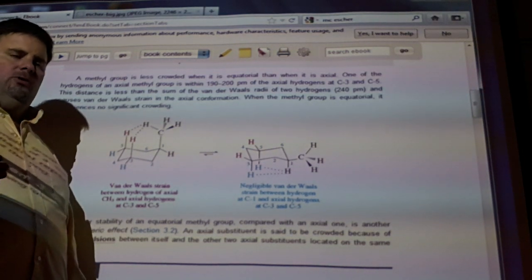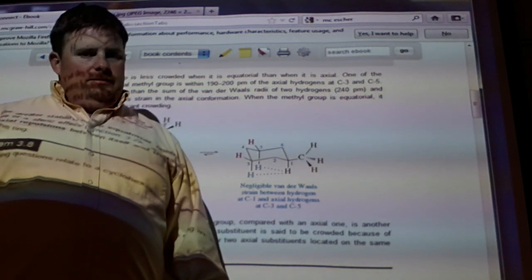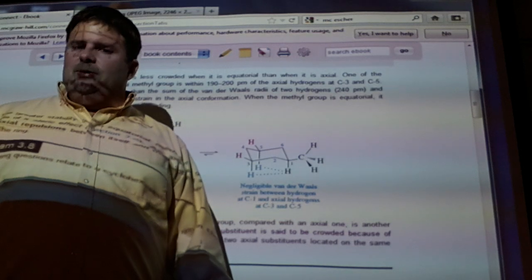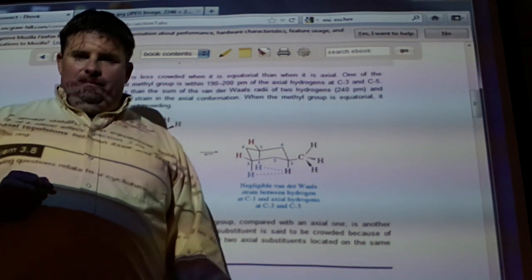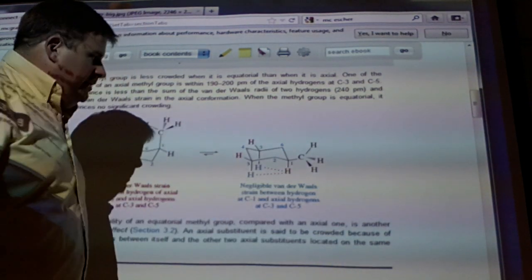So now I want you to ask yourself the question. What's bigger, CH3 or bromine? Well, bromine is bigger on the periodic table, Dr. Wayne. Yes, but it's only one atom. It doesn't have any bonds.